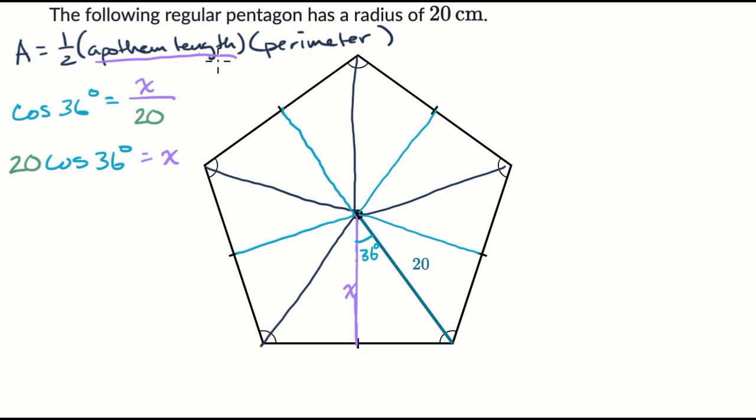Now we're not done yet, because we are still going to have trouble figuring out the perimeter. The perimeter is going to be five times each of these, each of the side lengths. And so let's do a little bit more trigonometry here. We know what x is now, but how can we figure out what's over here on this length right over here? Let's call that y.